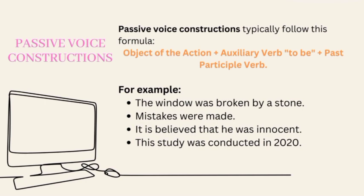'Mistakes were made.' This is a passive voice construction because the subject, mistakes, is not the agent or performer of the action, making. The agent is not specified in this sentence, which means we don't know or don't want to say who made the mistakes. The verb phrase 'were made' is formed by using a form of 'to be' — were — and a past participle of a transitive verb, made.